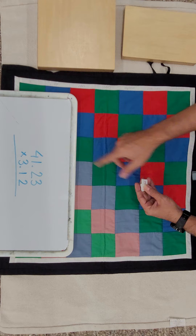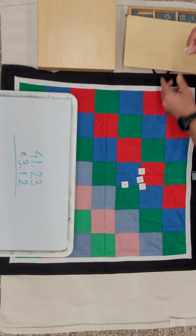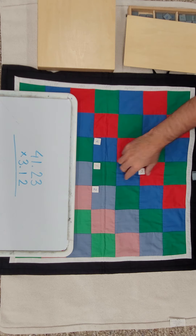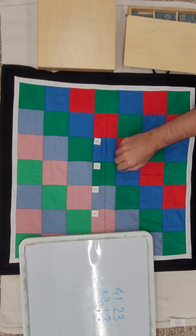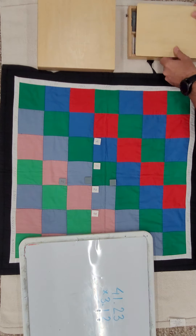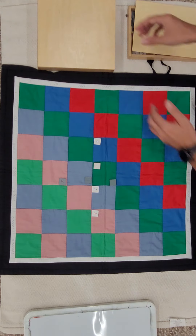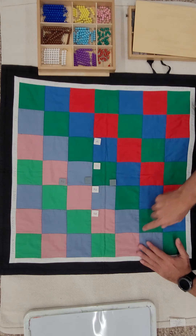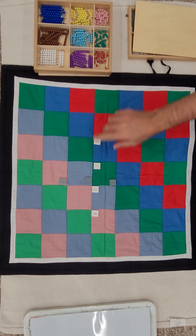So I'll set up the operation here. We have forty-one and twenty-three hundredths, and we are going to multiply by three and twelve hundredths. As you see, this is one thing that is different — we could set it up like the regular checkerboard, but usually we do it this way so we can see the operation better. You can also try putting all numbers on the bottom making an L shape to see which you feel more comfortable with.